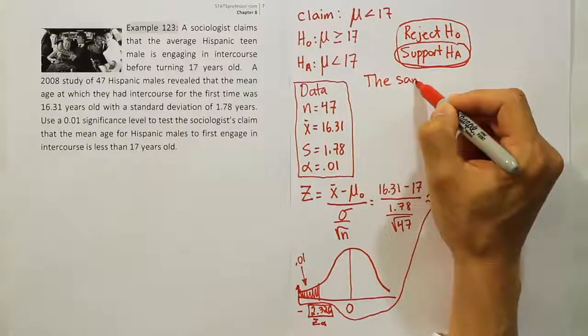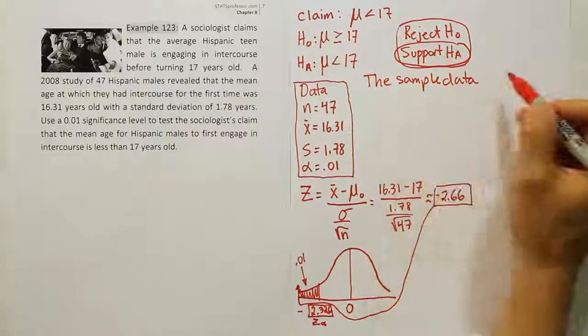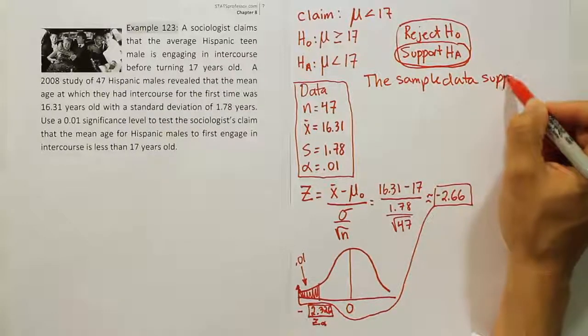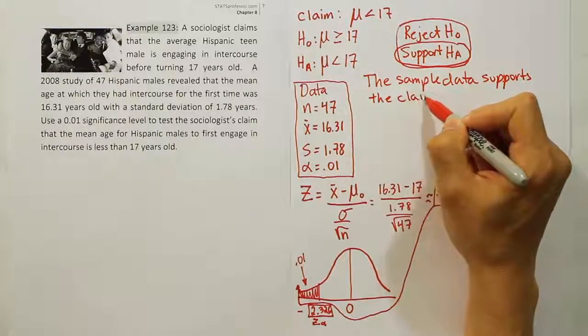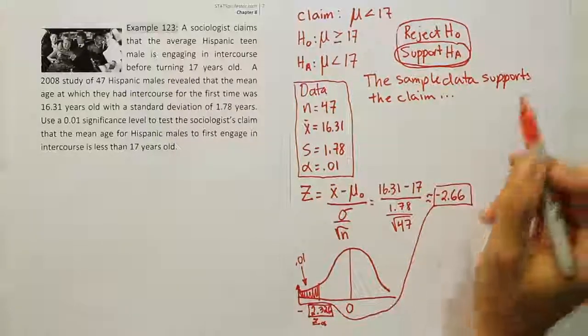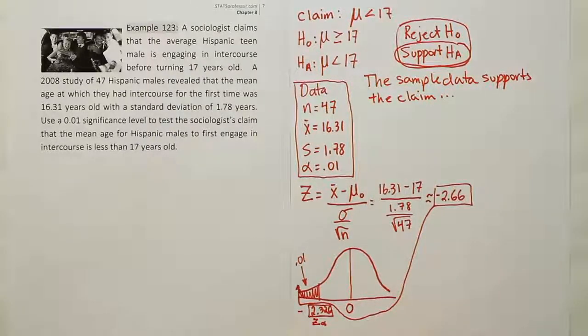The sample data supports the claim. And that claim is that the average age is under 17 for these Hispanic males to engage in intercourse for the first time. And so that's it. That's the end of the problem.